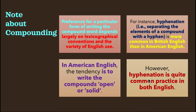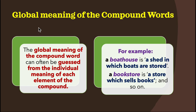In American English the tendency is to write compounds open or solid, whereas hyphenation is more common in British English. The global meaning of a compound word can often be guessed from the individual meanings of each element. For example, a boathouse is a shed in which boats are stored, and a bookstore is a store which sells books.